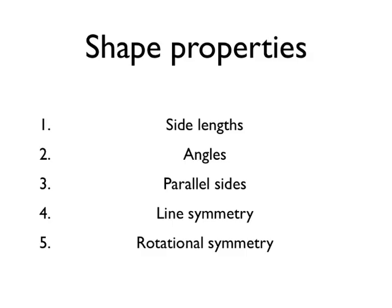The second shape property is the angles — the interior angles. Are any of the angles the same? Are they all the same? Are angles that are opposite each other the same, and so on? We can describe lots about a shape using its angles.